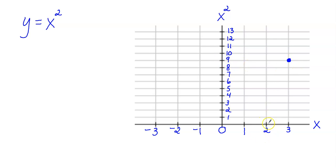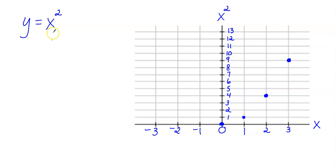Now let's do the same thing with 2: 2 squared is 4, 2 times 2 is 4, right over here. For x equals 1, 1 squared is 1 times 1, which is 1. And 0 squared is 0 times 0, which is 0. Then we'll do the same thing with the negative x values.